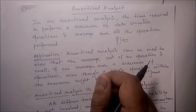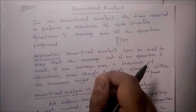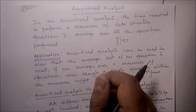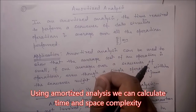Amortized analysis is a method for analyzing a given algorithm's complexity — how much time and space are required to execute the algorithm. Using amortized analysis, we can calculate time and space complexity.